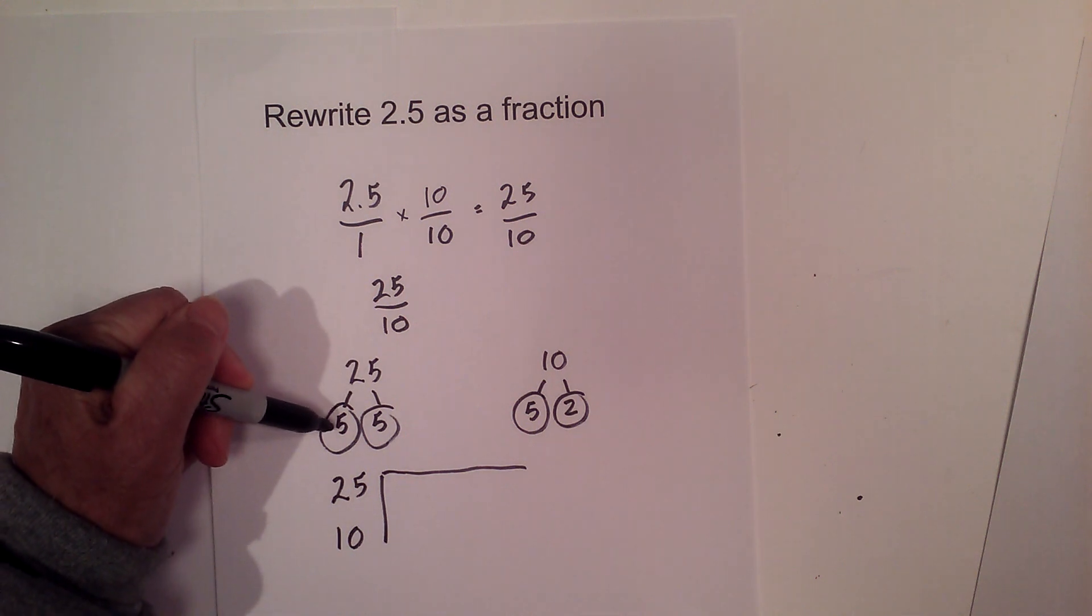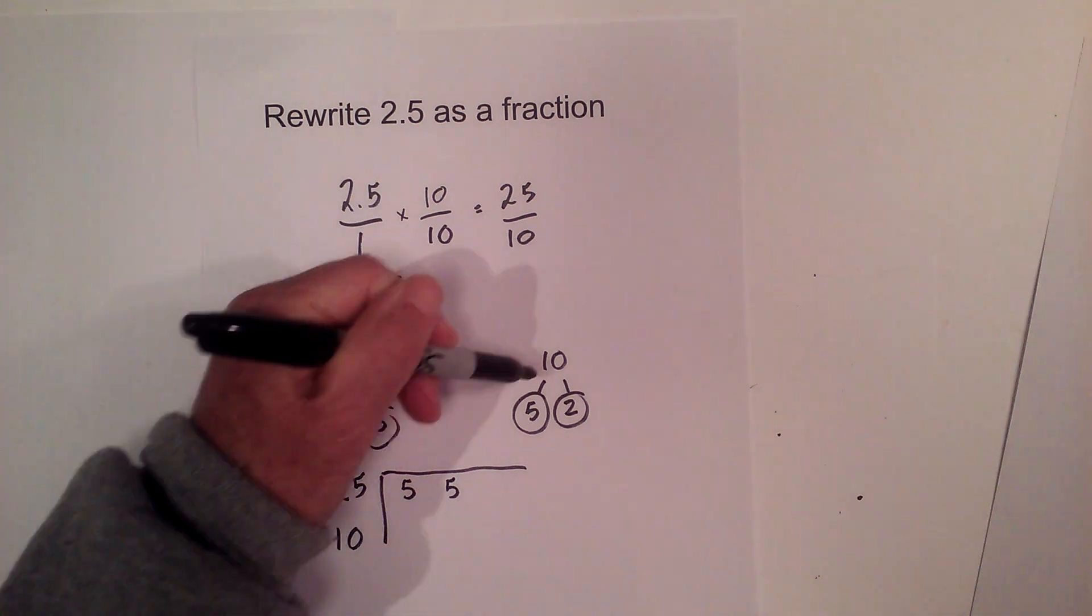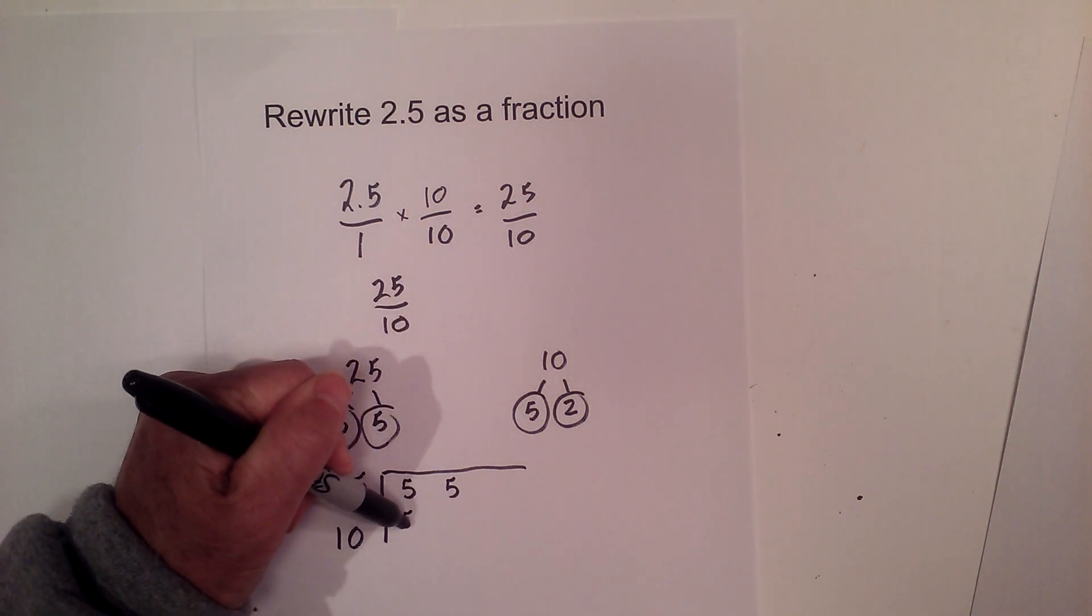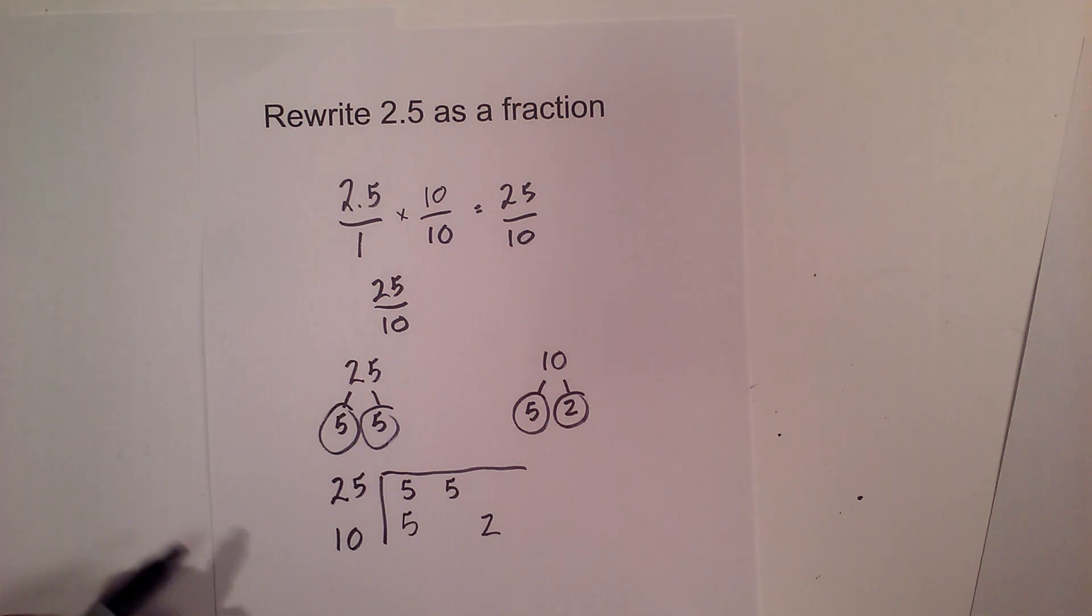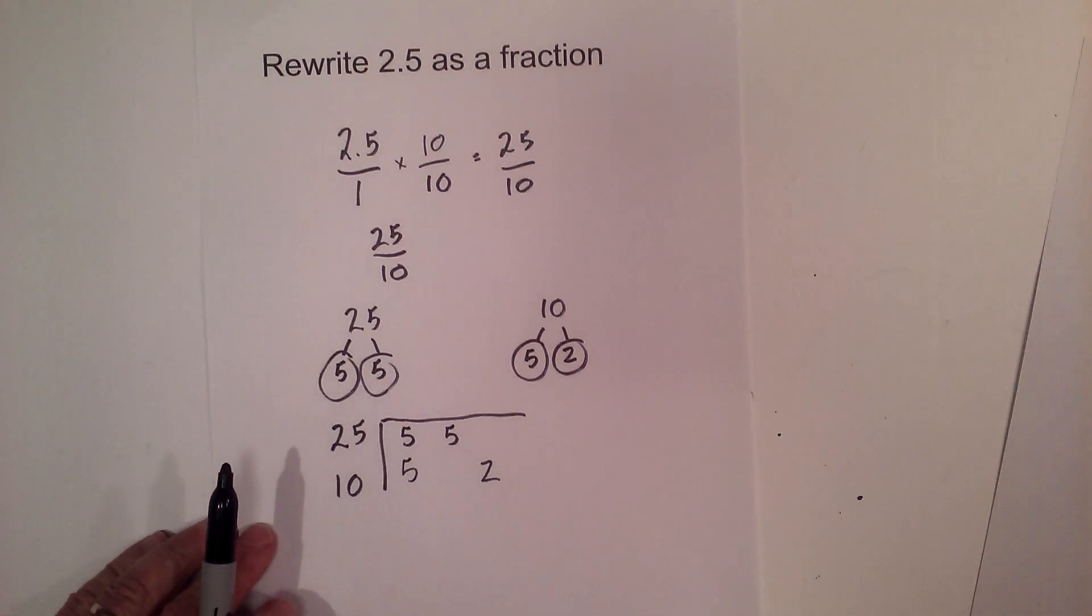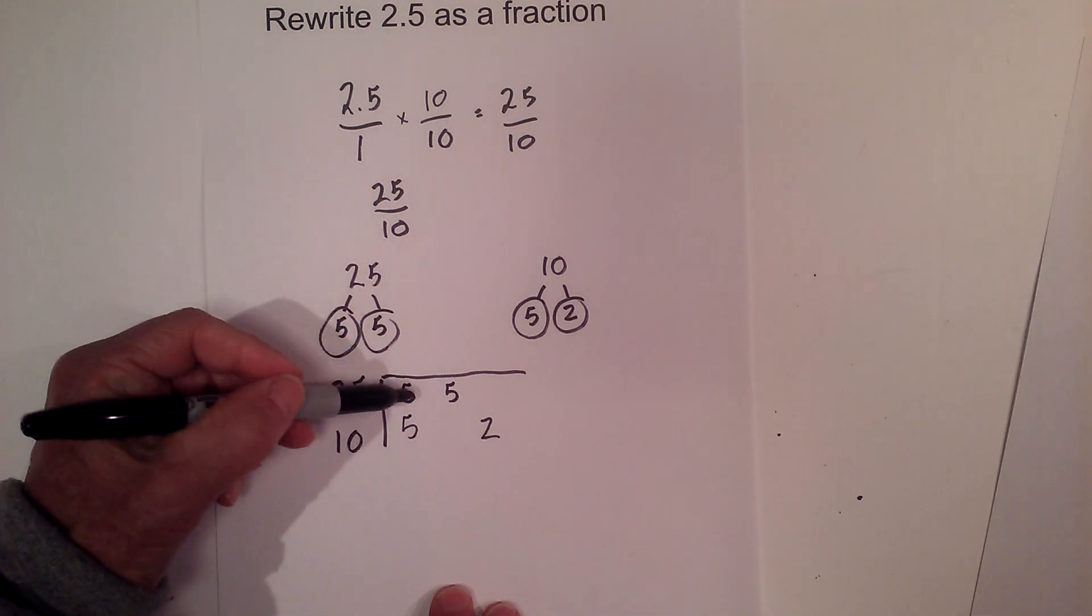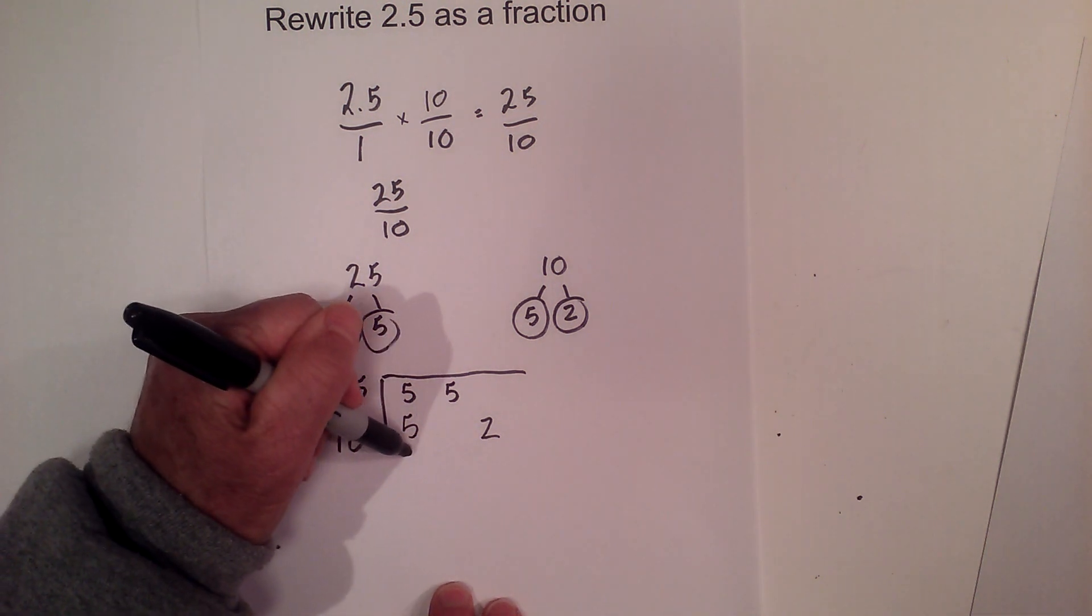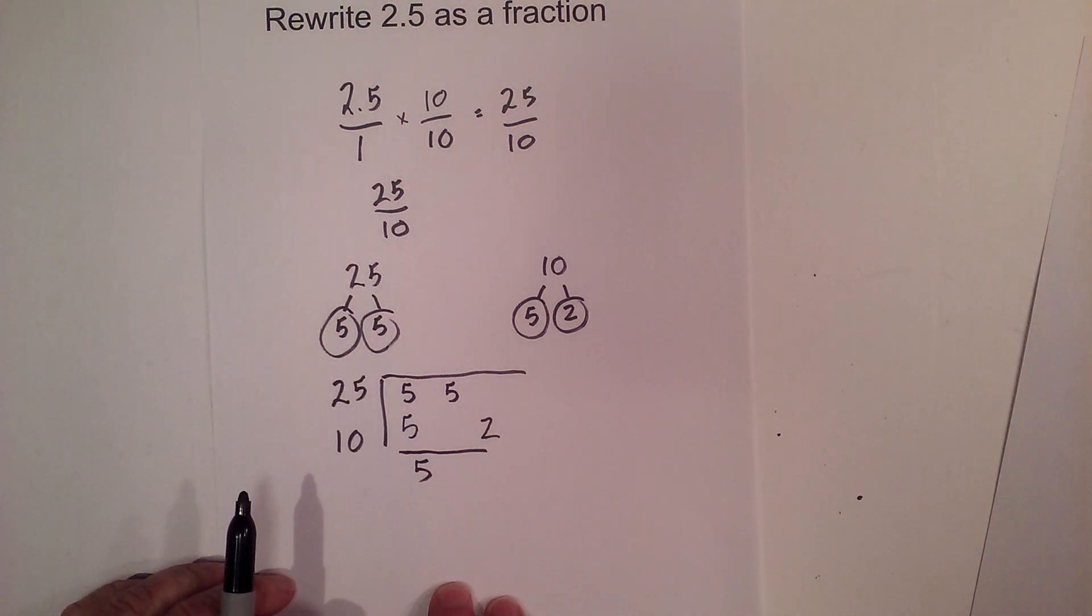I'm going to write the prime numbers of 25 which are 5 and 5 and the prime numbers of 10 which are 5 and 2. To find the greatest common factor you need to find pairs and I only have one vertical pair and that is 5. So the greatest common factor of 25 and 10 is 5.